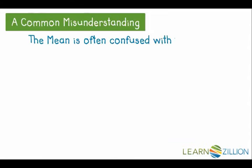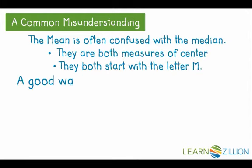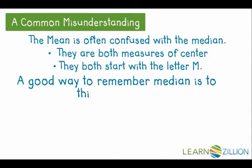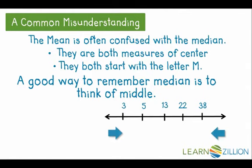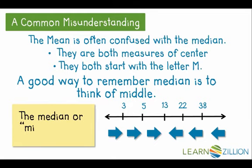The mean is often confused with the median. They are both measures of center and both start with the letter M. The median is the middle number when the numbers are in order. Let's take a look at the number line. As you can see, the number that is directly in the middle is the number 13. So the median or middle number is 13.